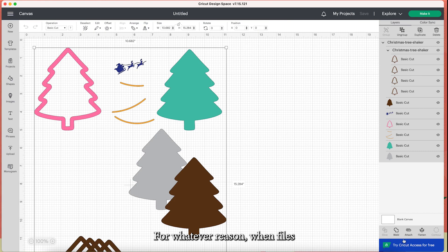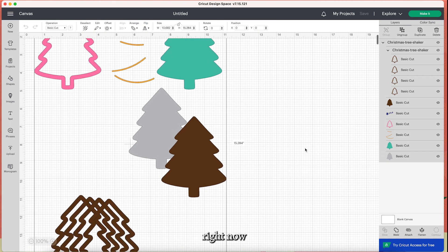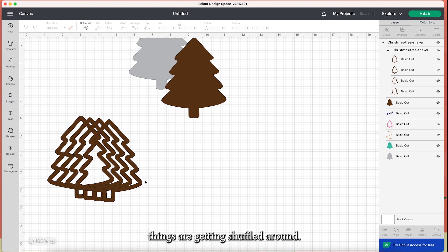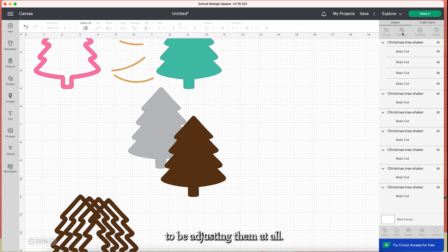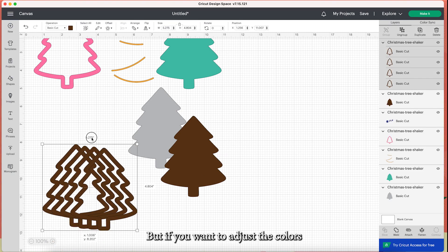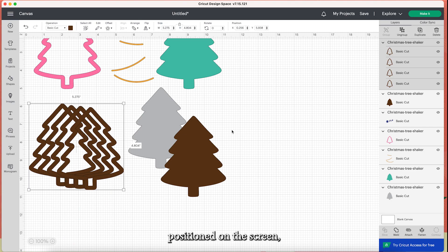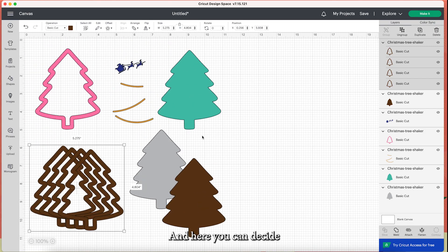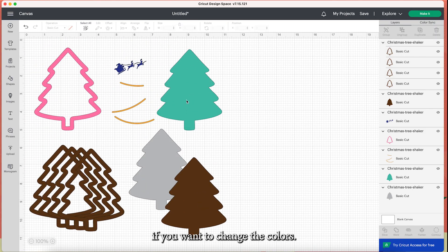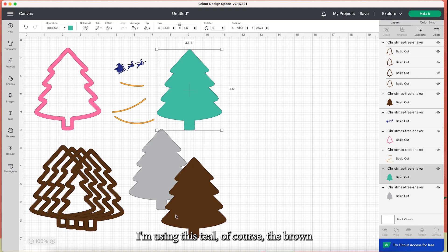For whatever reason, when files are being uploaded into Cricut Design Space right now with one of the new updates, things are getting shuffled around. Don't worry about it because we don't really need them to all be seen because you're not going to be adjusting them at all. But if you want to adjust the colors or where they are positioned on the screen, you just need to hit ungroup. I zoomed out a little bit so I know where they all are. And here you can decide if you want to change the colors. I'm using this teal of course. The brown is for the craft board or craft paper. If you want to change the colors so that you can see exactly which color applies to which mat, you can do that here.